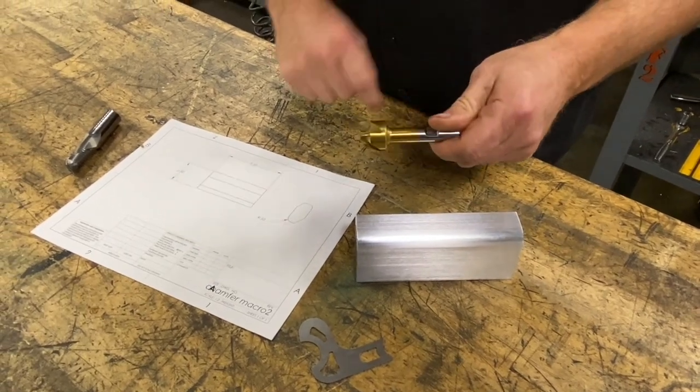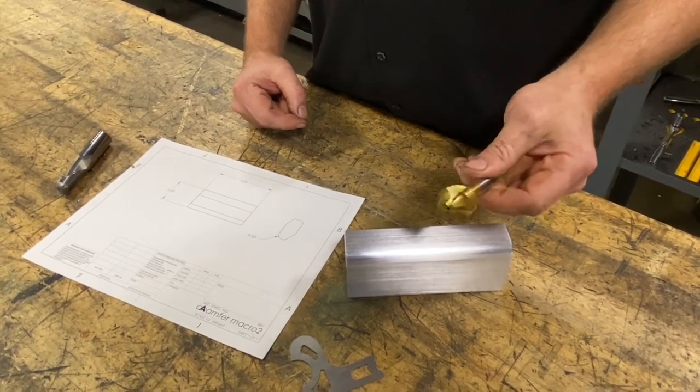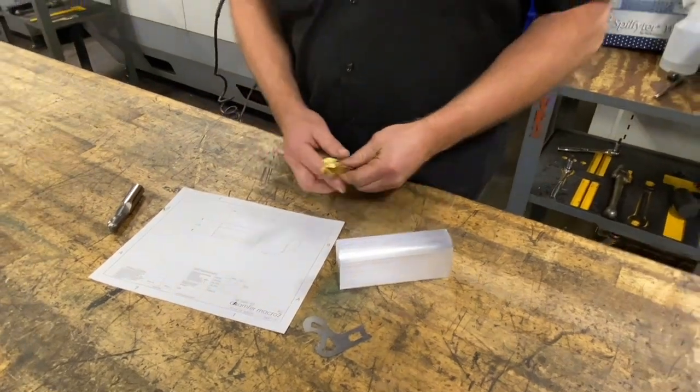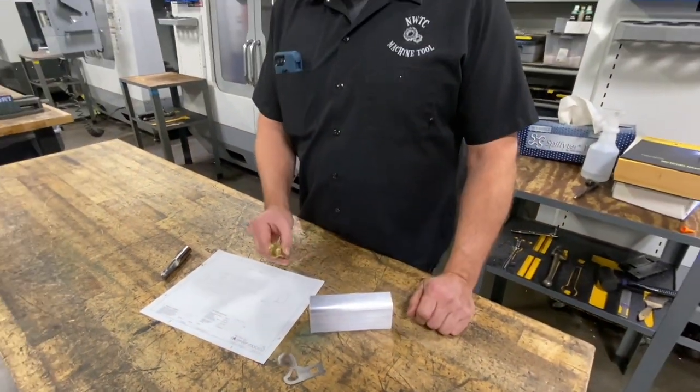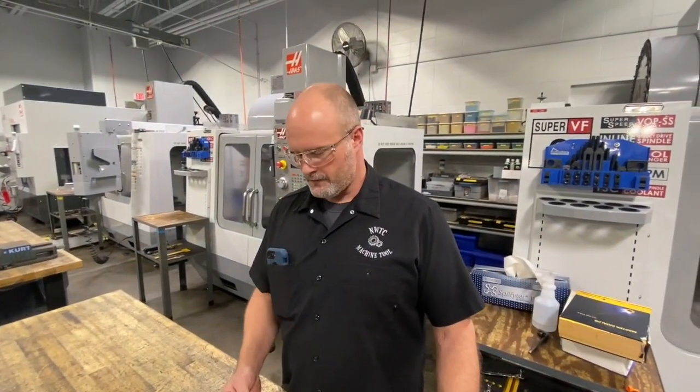For the most part, a lot of these tools come in just nominal sizes in eighth or one-sixteenth increments. So every once in a while we run into a situation where maybe we need a radius on the corner of a part that we can't find the correct tool for. The only option is to go with a custom ground tool or some situation like that.